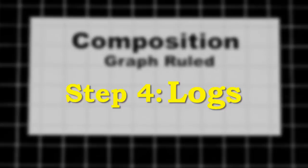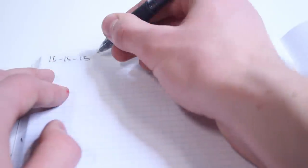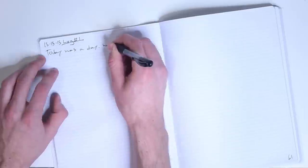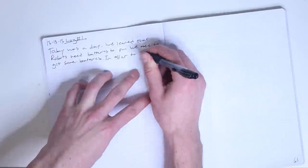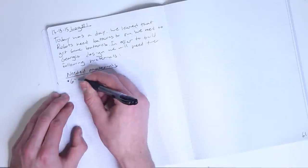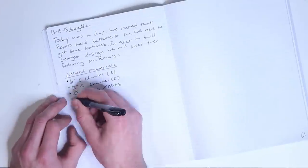Step four: logs. In addition to designs, it is wise to include frequent logs in your notebook. Logs can be anything from design evaluations to written plans to lists of materials needed to construct a particular segment of your robot. They should, however, show the progress of your team. Format these entries roughly the same as your design entries with a date and a title if you feel the log deserves one.